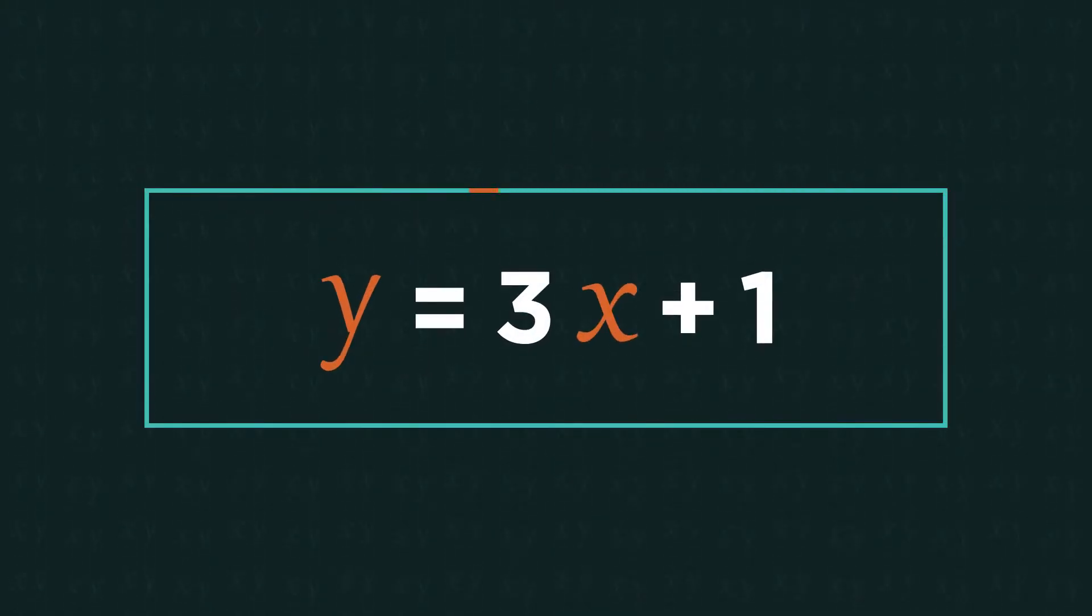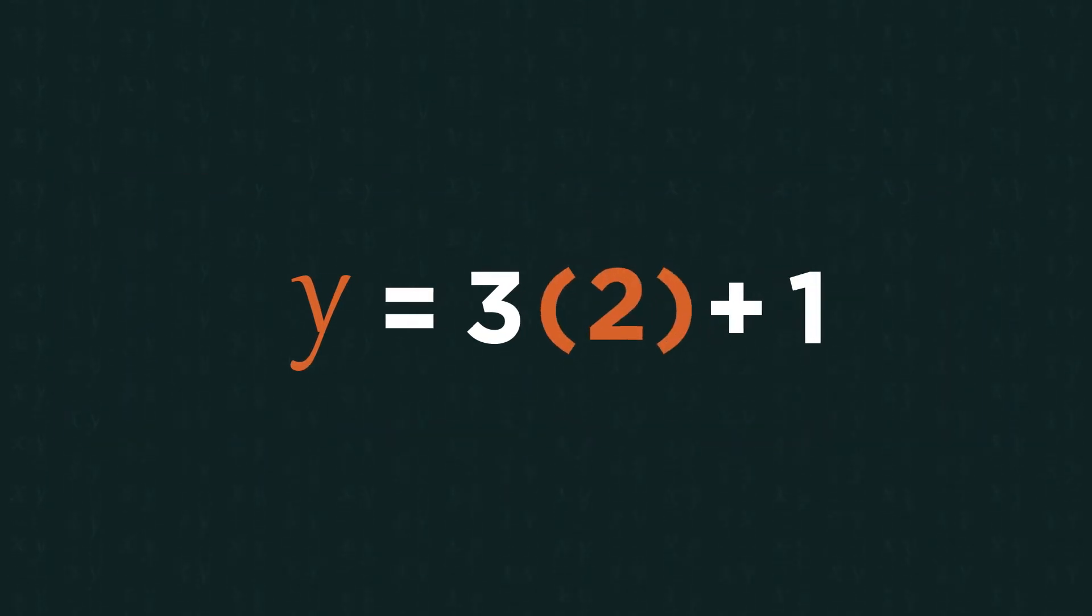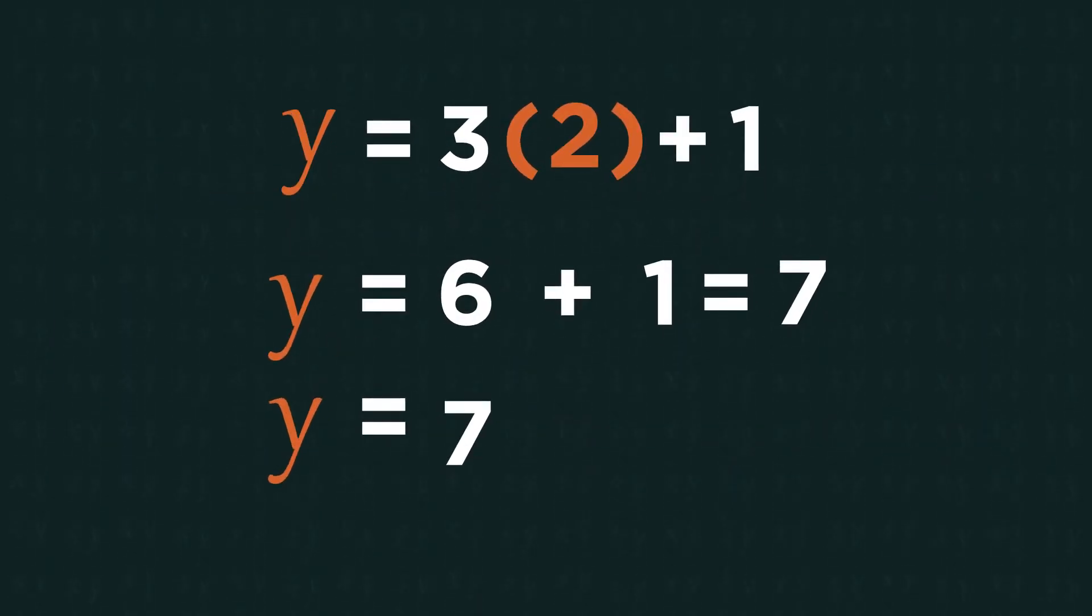We have this relationship. The value of y depends on what the value of x is. So if x is 2 then y is 7.